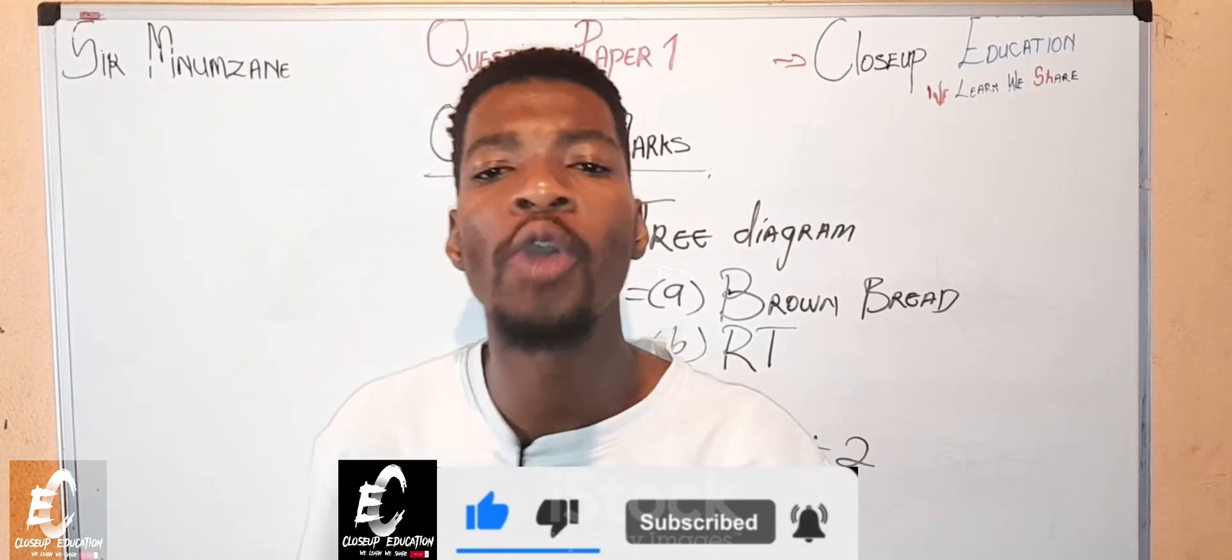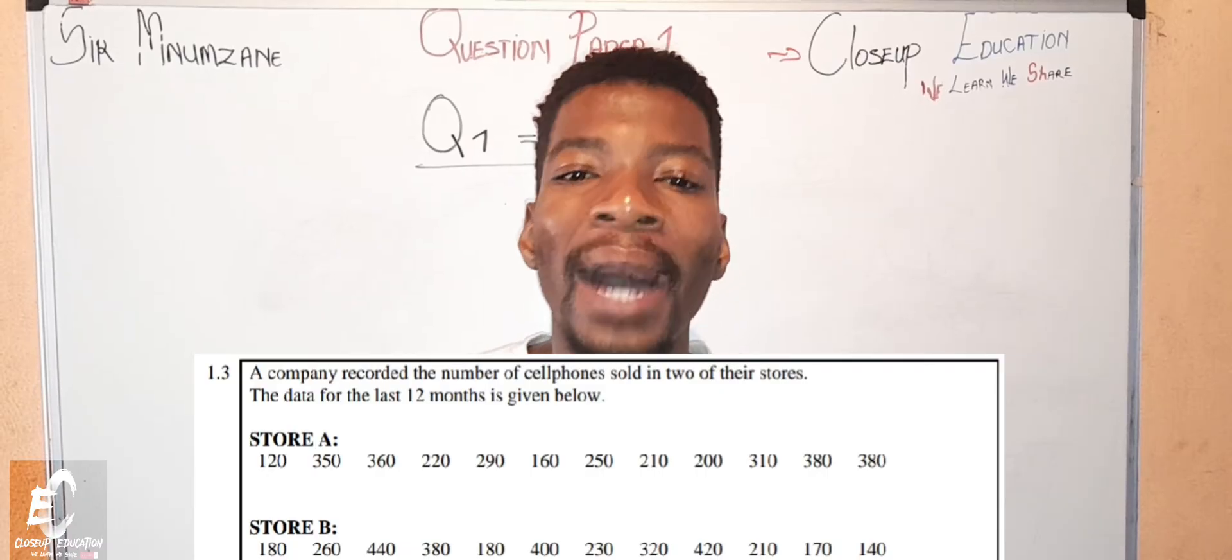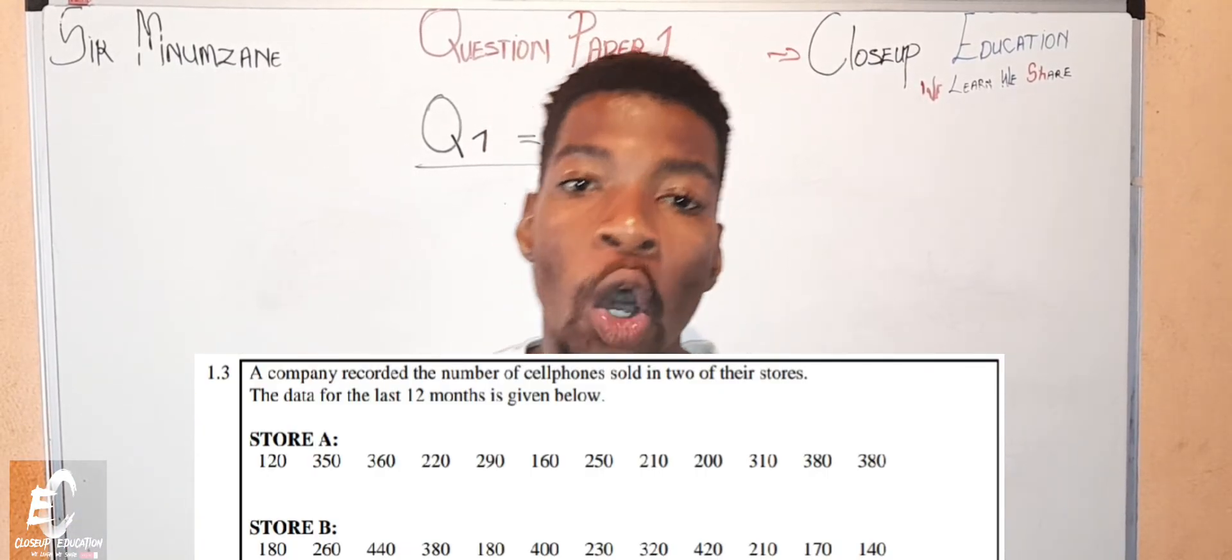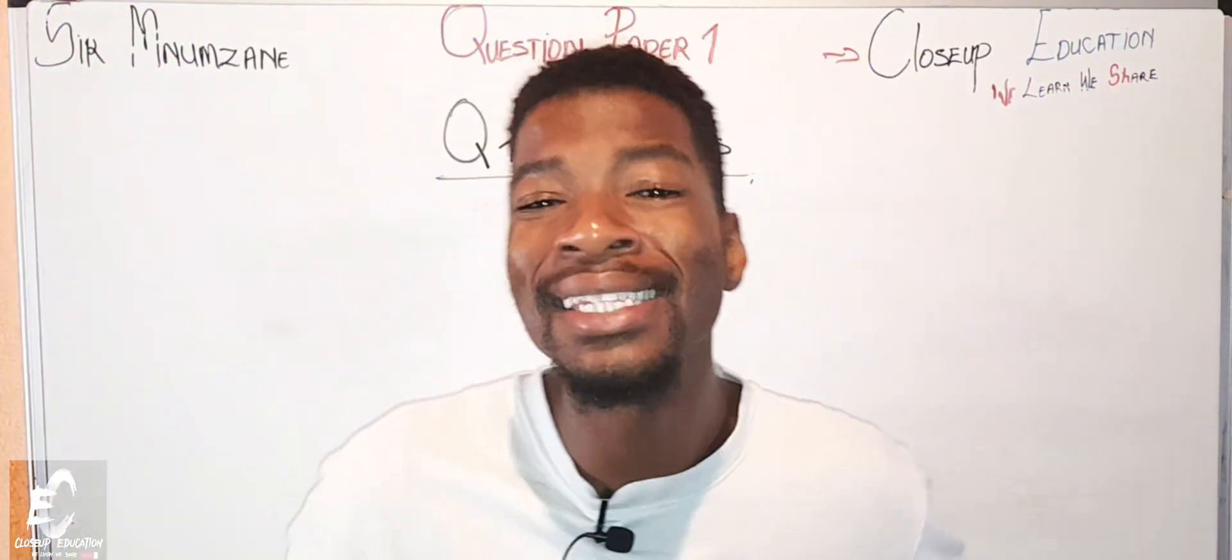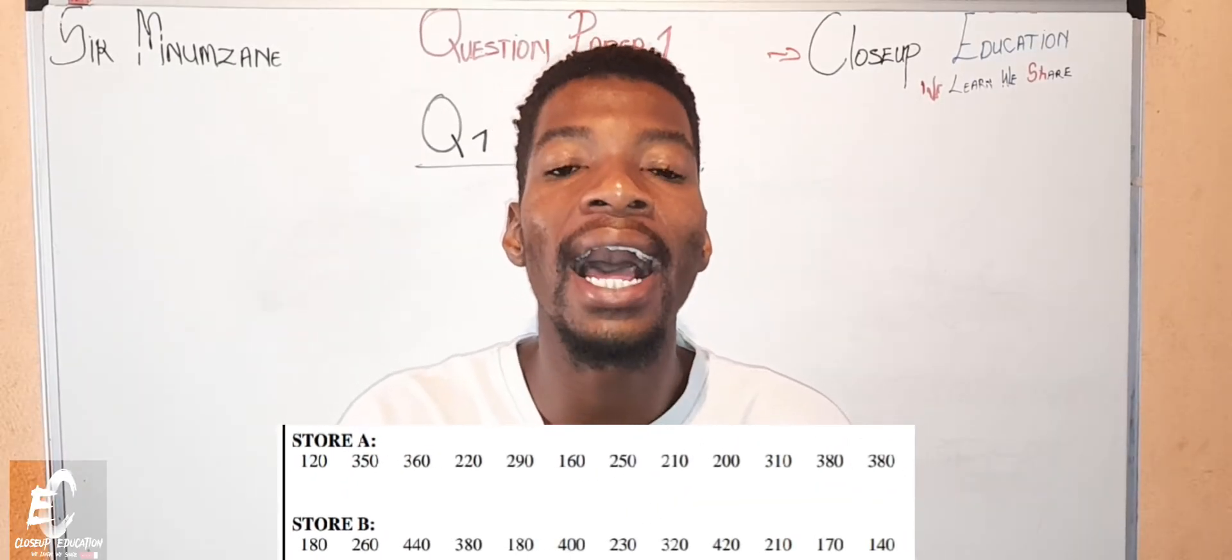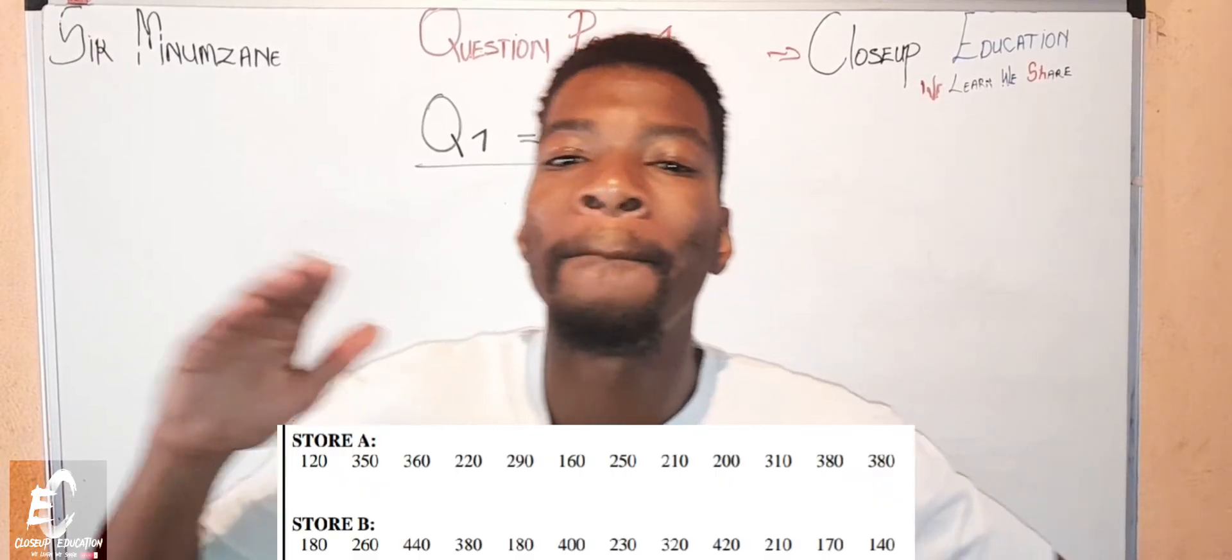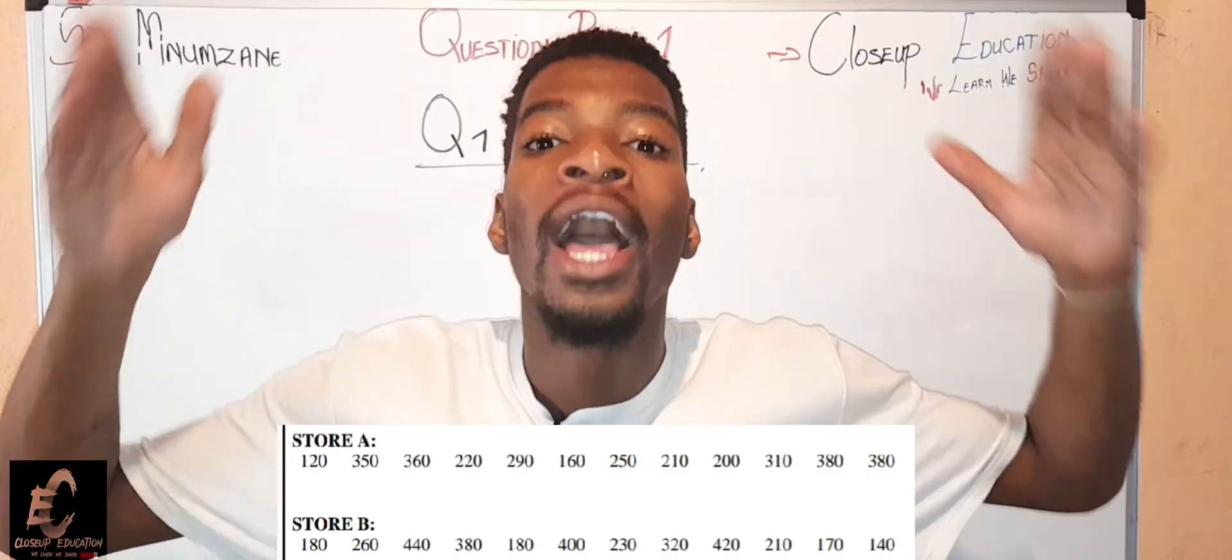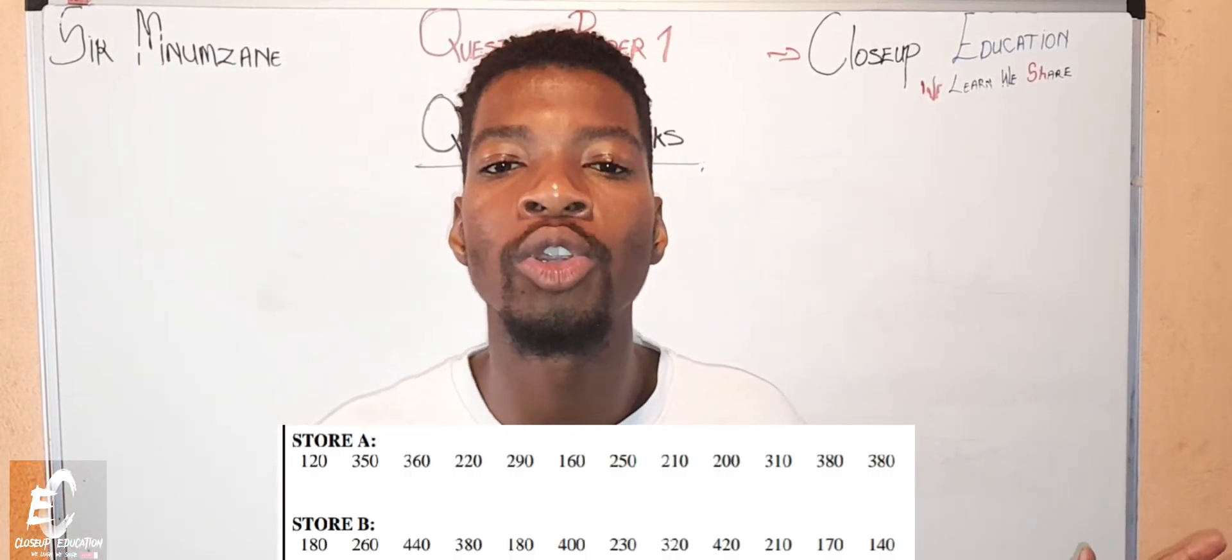Let's move to question 1.3. Let's finish our 32 marks. Subscribe, like the video because we are moving. What does our scenario say? It says a company recorded the cell phones sold between their two stores: store A and store B. Remember when you are answering any data handling question, you have to rearrange the numbers given from the smallest till the biggest. Remember that you don't answer any question before rearranging the numbers. I'm not going to be rearranging the numbers with you guys - that is your homework.